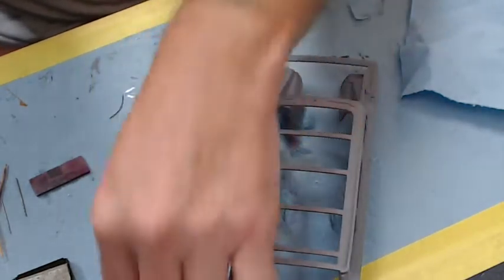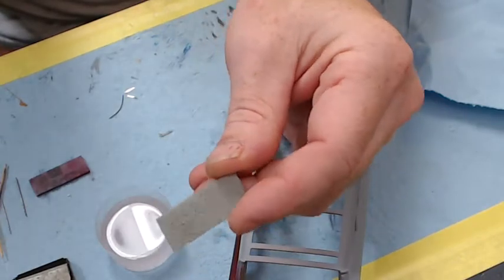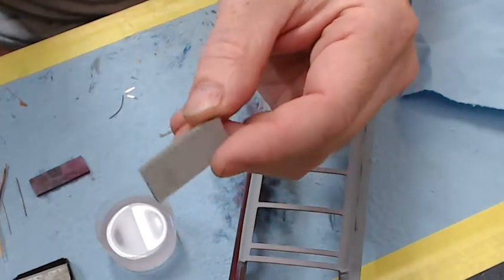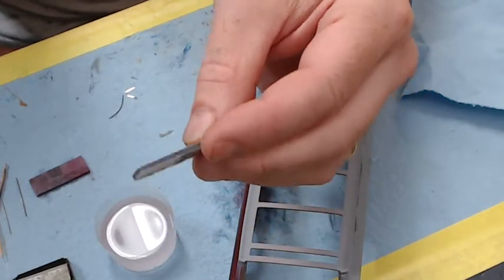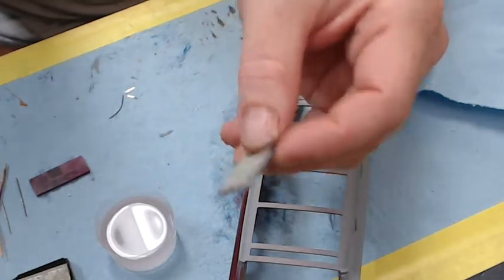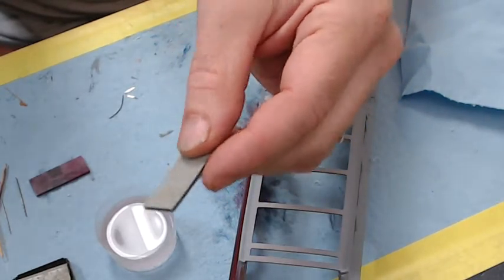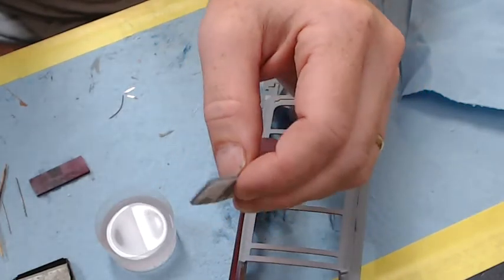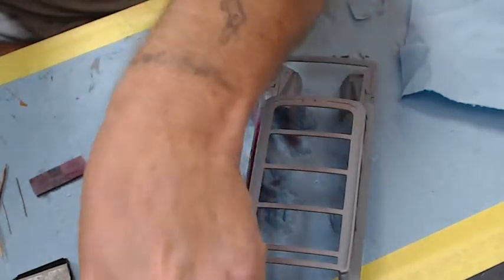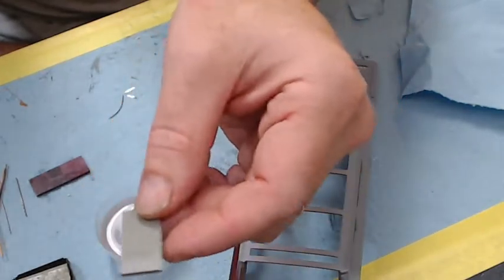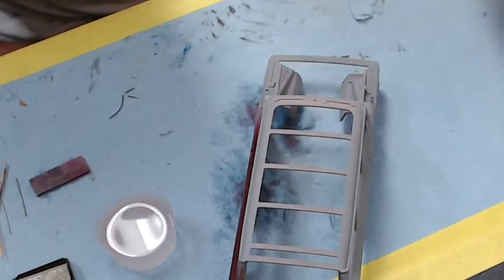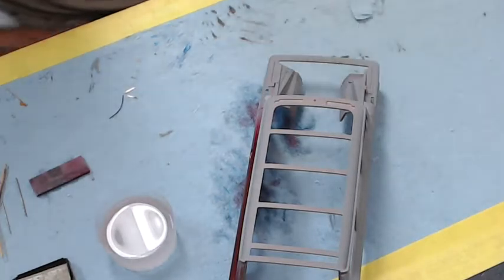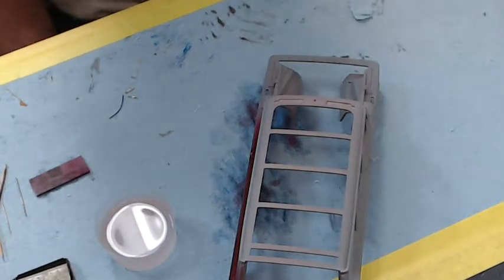I do have some of the 3000 grit Trizac sanding sponge. This is usually what I start with when I'm wet sanding for polishing. Sometimes I'll start with 2000 depending on how bad I screwed up the finish, but most of the time I'll start with this 3000. They also make that in 5000, and some of my finishes I'll start with 5000.